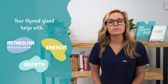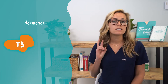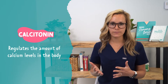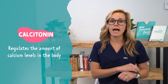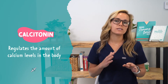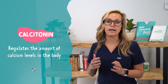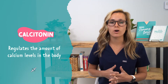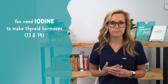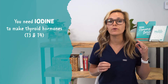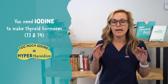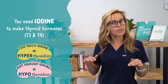The thyroid gland produces three hormones: T3, T4, and calcitonin. Calcitonin regulates the amount of calcium levels in the body by taking calcium out of the blood and pushing it back into the bones. You don't really need to know that for remembering the signs and symptoms of hyperthyroidism. Another crucial thing to know is that you need iodine to make thyroid hormone T3 and T4, and iodine must be consumed through food. Too much iodine causes hyperthyroidism and not enough iodine causes hypothyroidism.